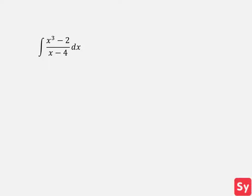Now that we have long division fresh in our mind, let's see an example. We have the integral of x cubed minus 2 over x minus 4. We see that the degree of the numerator is greater than the degree of the denominator, so we will use long division to simplify this integrand. We put the numerator inside the bracket and the denominator outside the bracket. We want to get x of x minus 4 equal to x cubed, so we put down x squared and multiply the denominator by x squared. Next we subtract and get 4x squared.